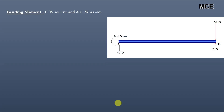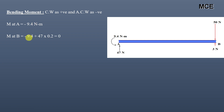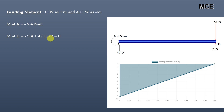For the bending moment diagram, taking clockwise moments as positive and anti-clockwise as negative: moment at A is −9.4 N·m. Moment at B is −9.4 + (47 × 0.2) = 0. The bending moment diagram is triangular, varying linearly from −9.4 N·m at A to 0 at B.